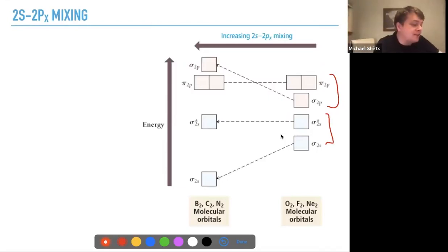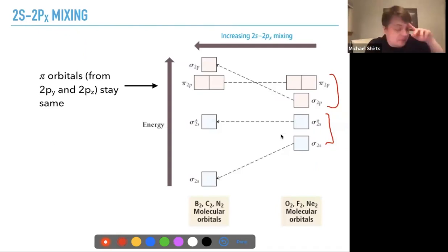Okay, but if you have mixing between the 2s and 2p, then you have a set. So the pi orbitals from the 2py and 2px, they stay the same across.